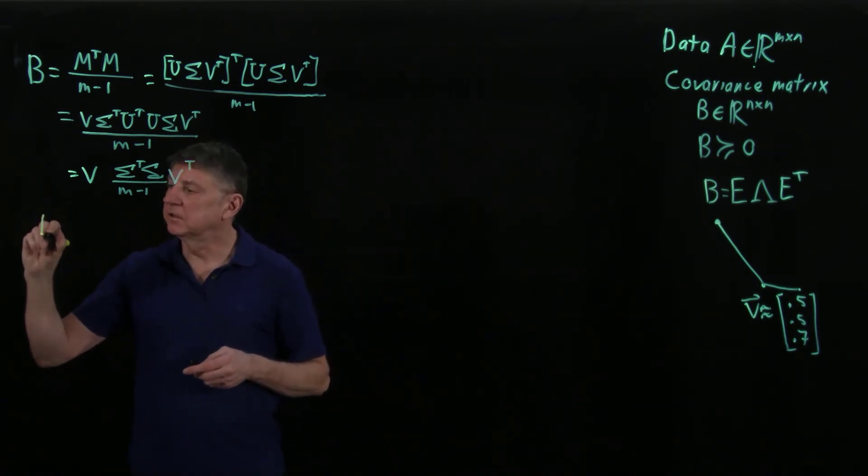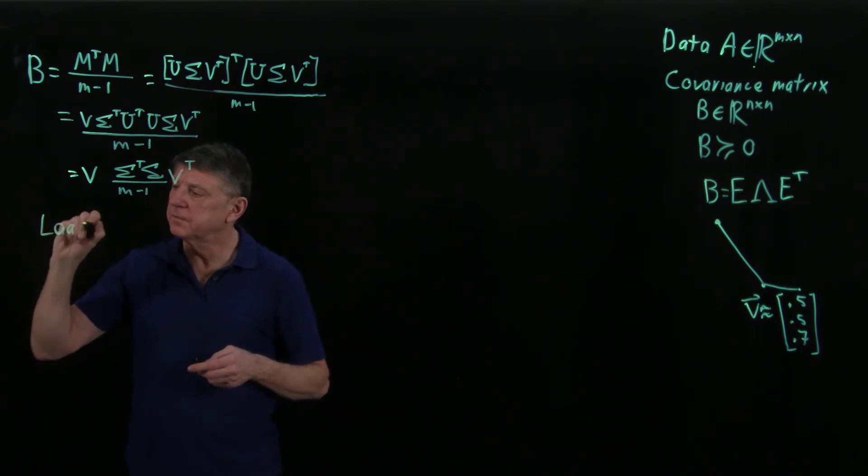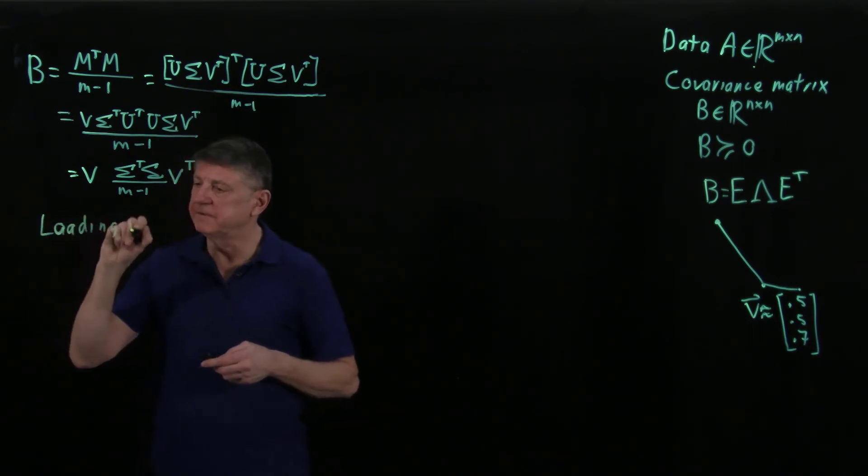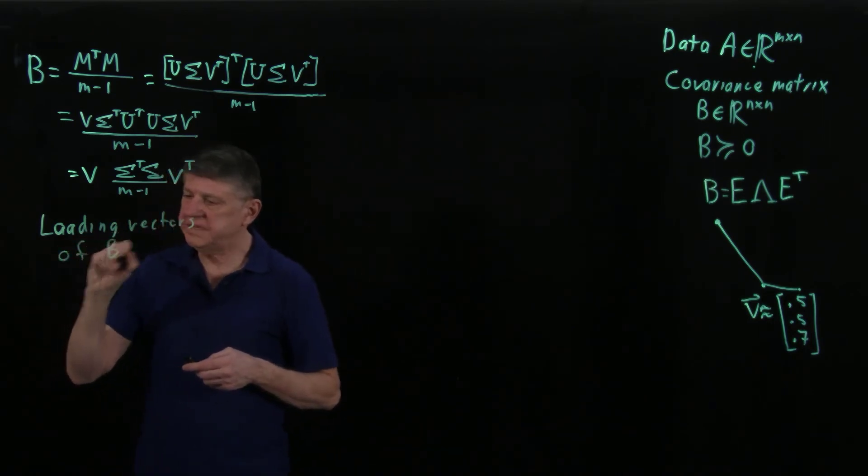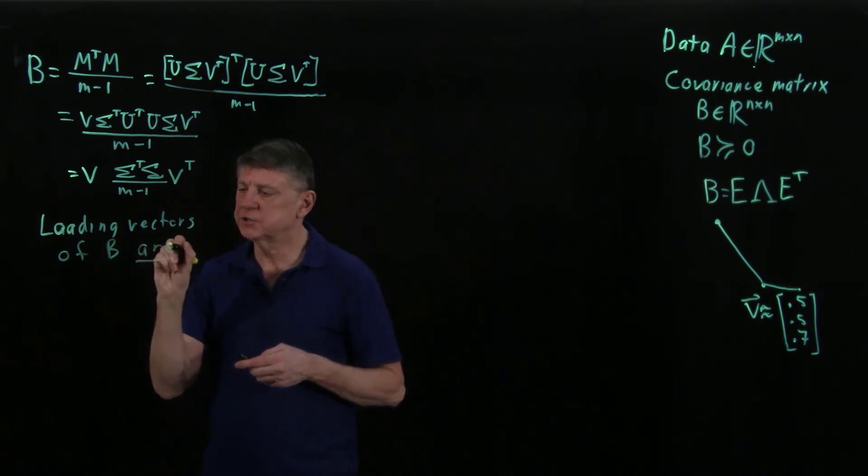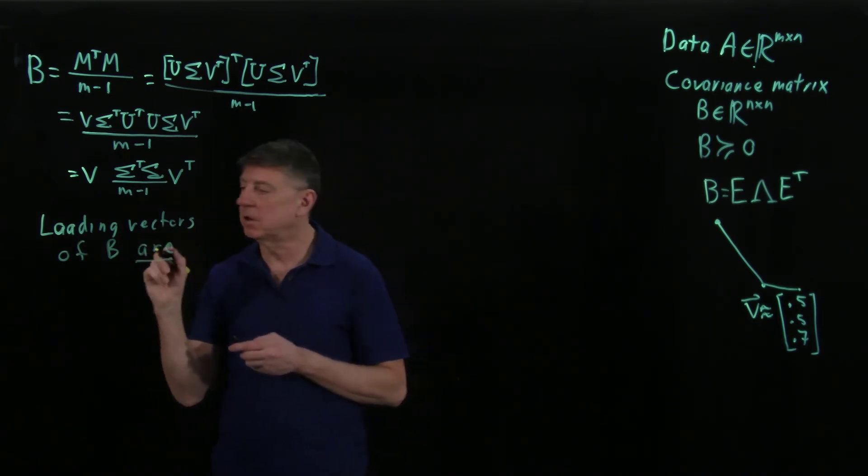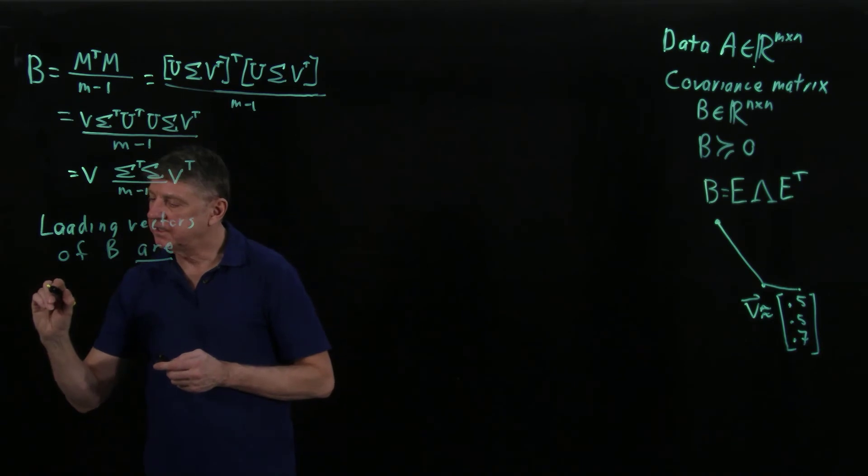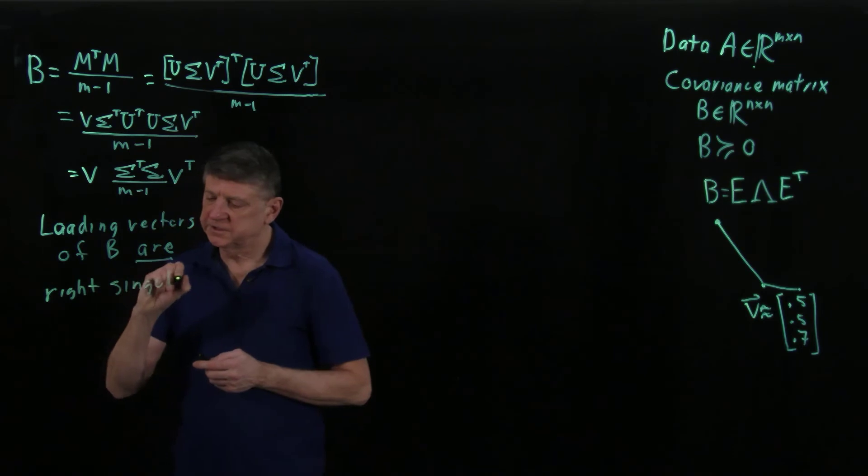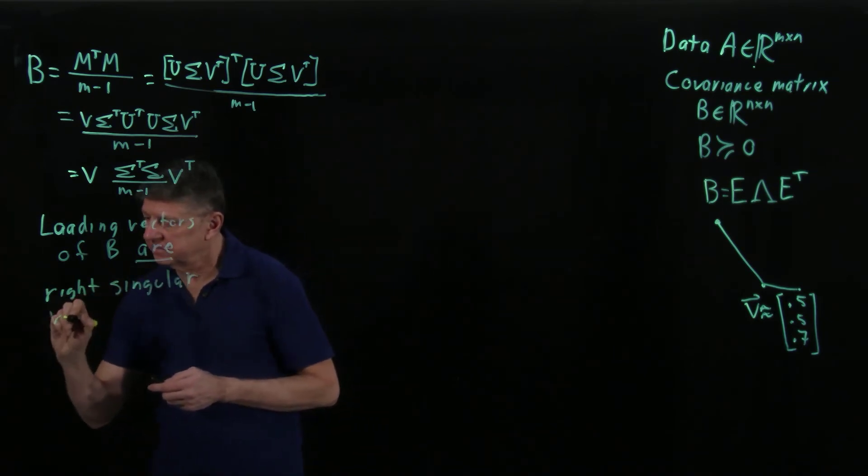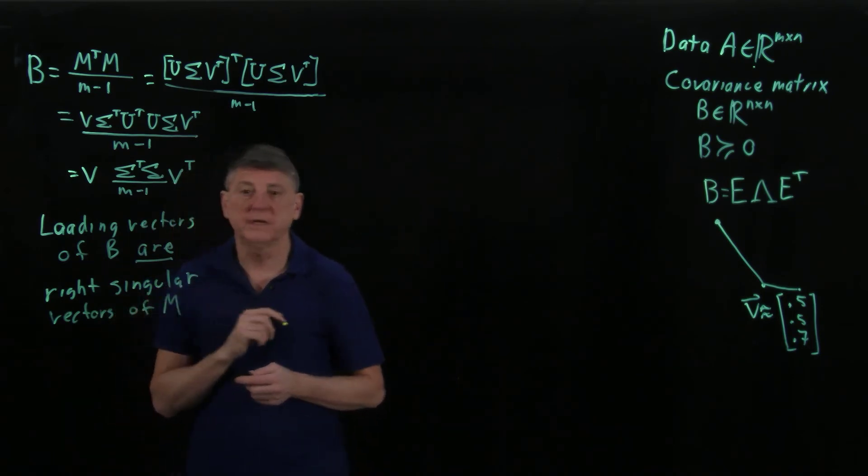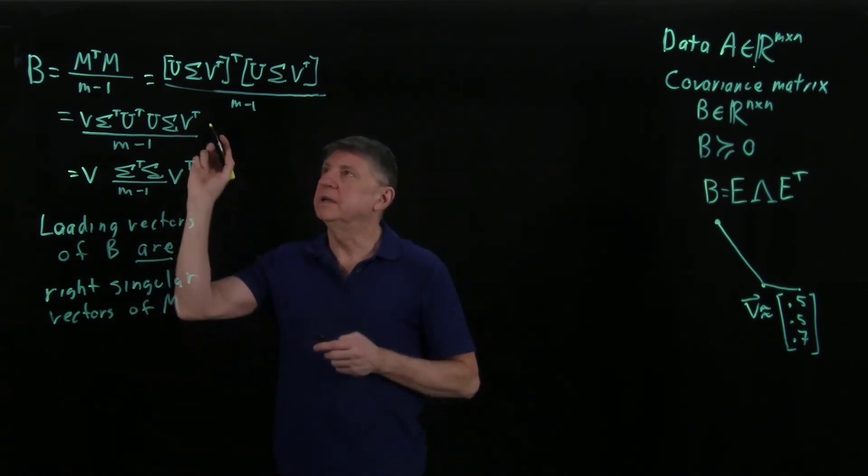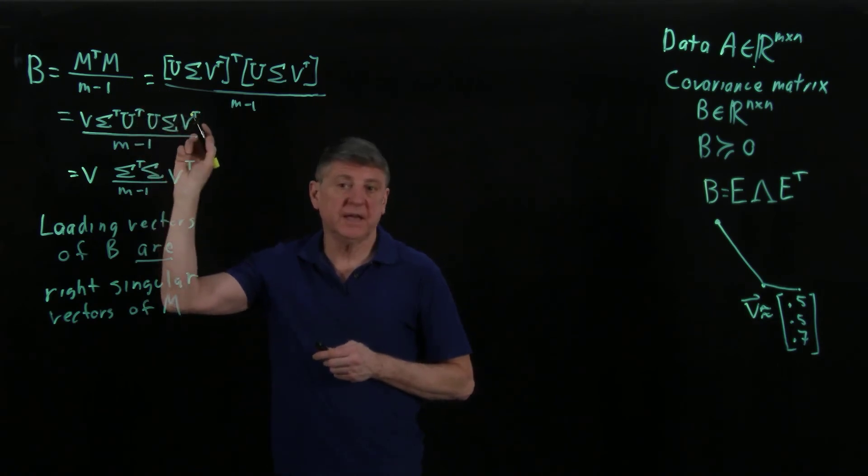That means that the loading vectors of B are, let's underscore that because that's an important observation, these are the right singular vectors of our zero mean data. And we, to compute the SVD.